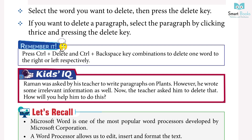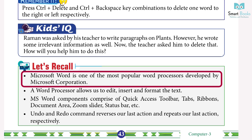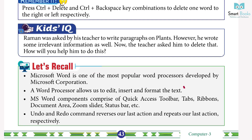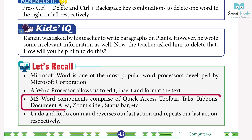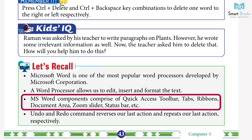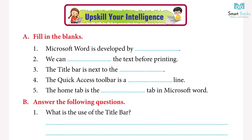Raman was asked by his teacher to write a paragraph on plants; however, he wrote some irrelevant information. The teacher asked him to delete it — how will you help him? Let's recall: Microsoft Word is one of the most popular word processors developed by Microsoft Corporation. MS Word components include Quick Access Toolbar, tabs, ribbons, document area, zoom slider, and status bar. Undo reverses the last action; Redo repeats the last action.